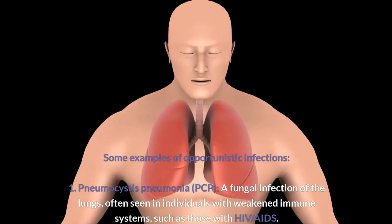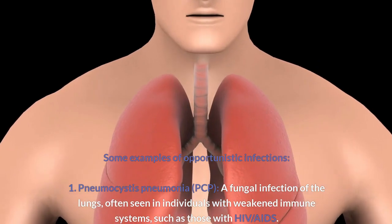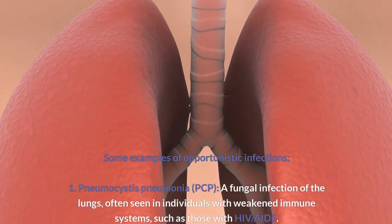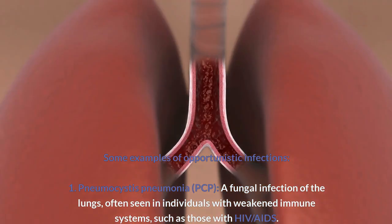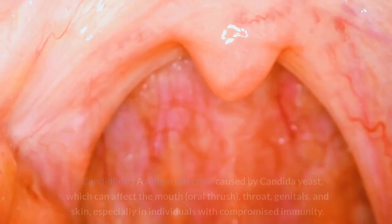Some examples of opportunistic infections. First, Pneumocystis pneumonia (PCP): a fungal infection of the lungs, often seen in individuals with weakened immune systems, such as those with HIV/AIDS.